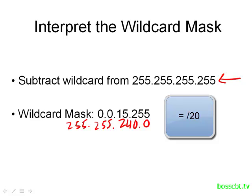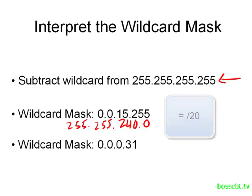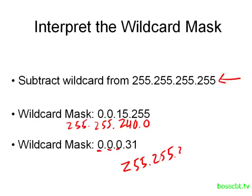As you can see, it's a large range. Let's do another example. We subtract 0 from 255 for each of the first three octets, giving us 255.255.255. Then we take 31 away from 255, and that gives us 224. So our subnet mask is 255.255.255.224, which equals a slash 27. Now we can more easily understand the range of IPs that this wildcard mask is talking about.